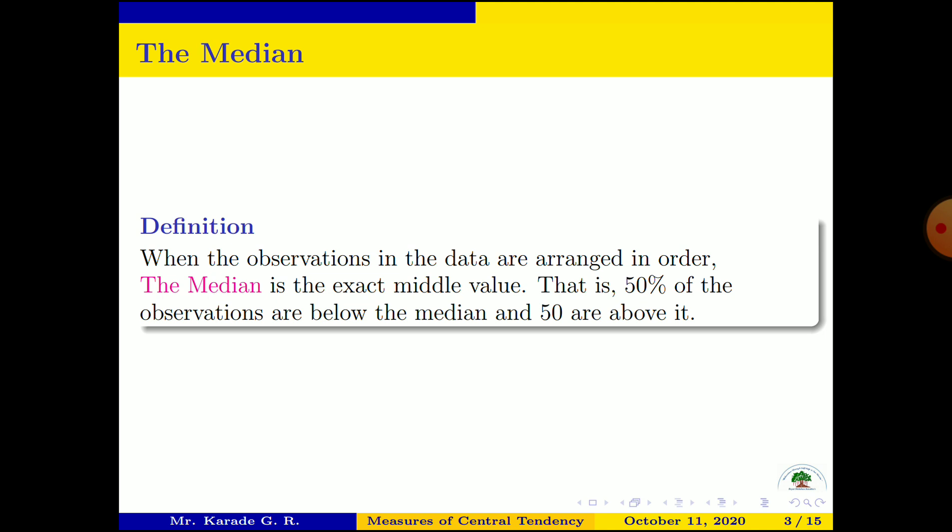The definition is: when observations in the data are arranged in order, the median is the exact middle value — that is, 50% of the observations are below the median and 50% are above the median. So when observations are arranged in either increasing or decreasing order, the median is the exact middle value of that data. Therefore, 50% of observations are below the median and 50% are above the median.